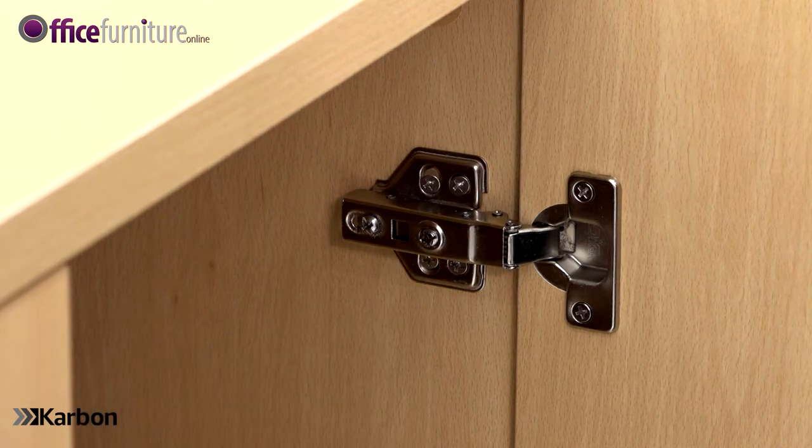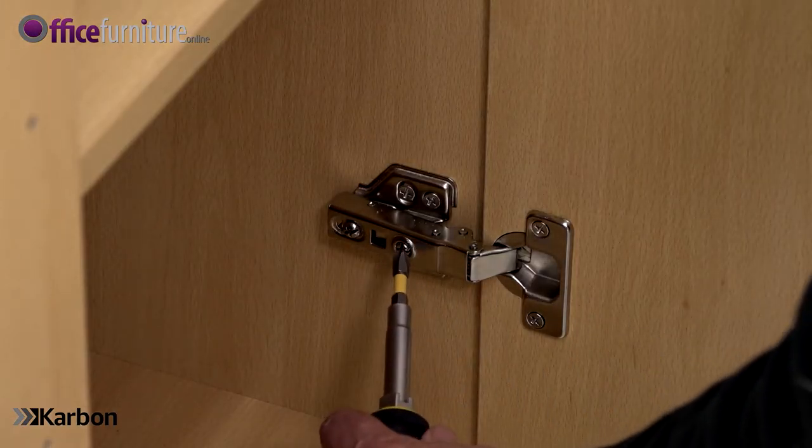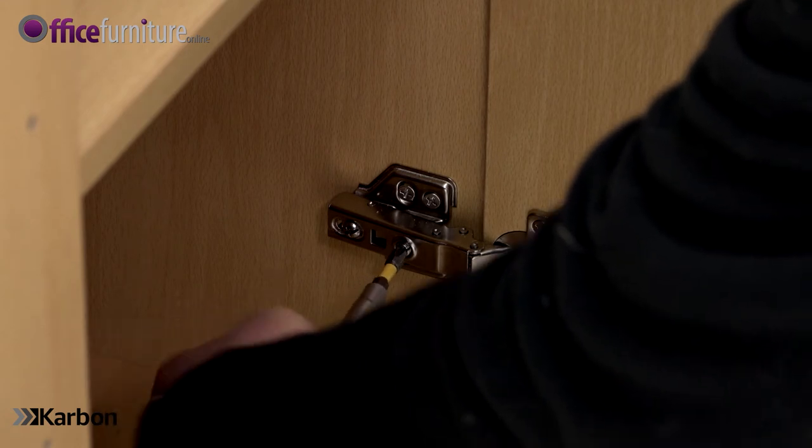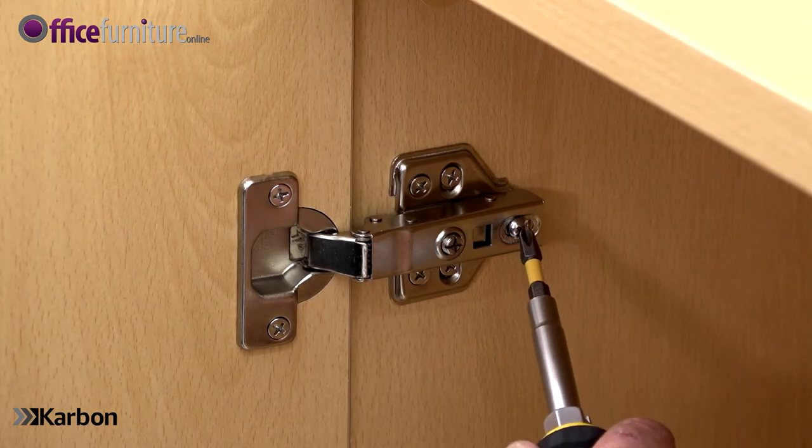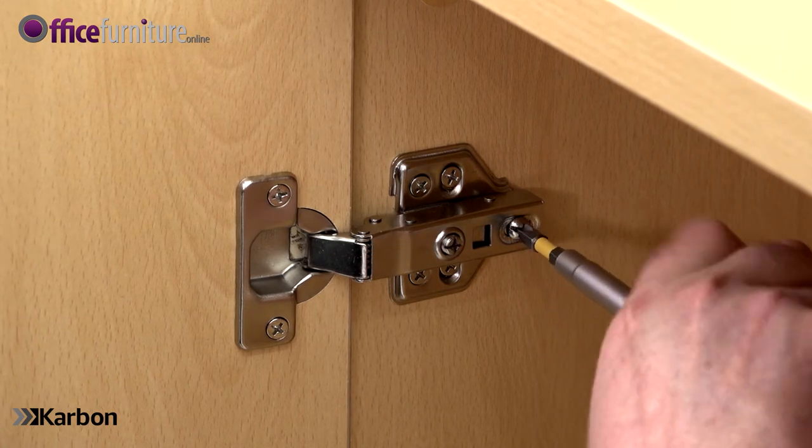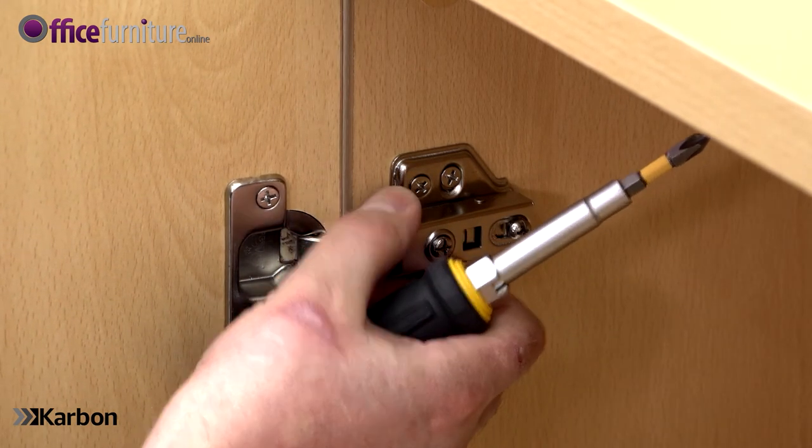You can fine-tune for any diagonal movement in the doors by adjusting the top and bottom hinges separately. The screw to the rear of the hinge allows the door itself to slide forward or backwards within the hinge mechanism.